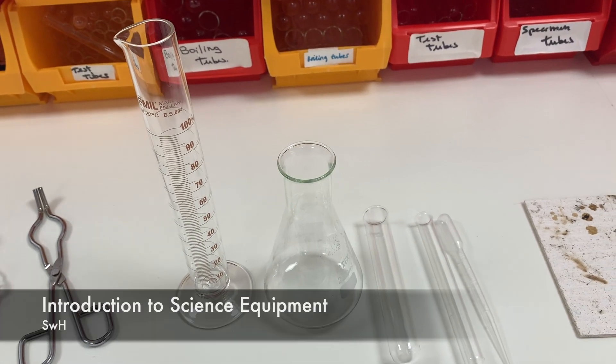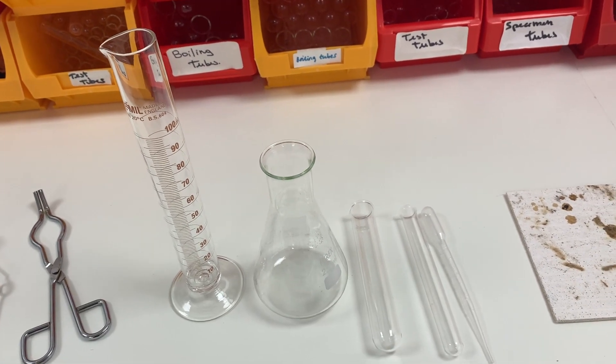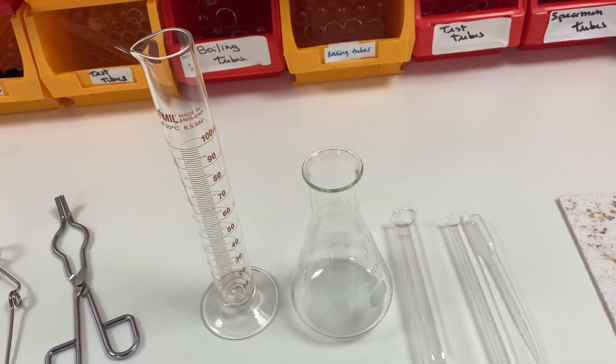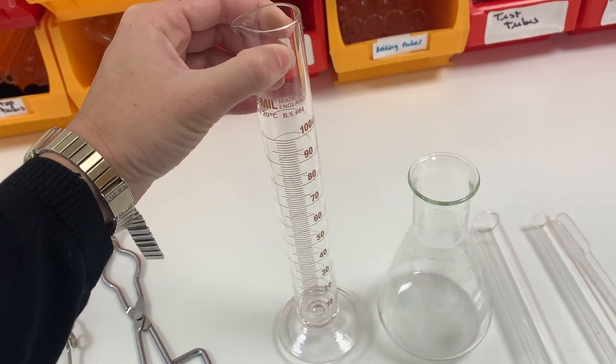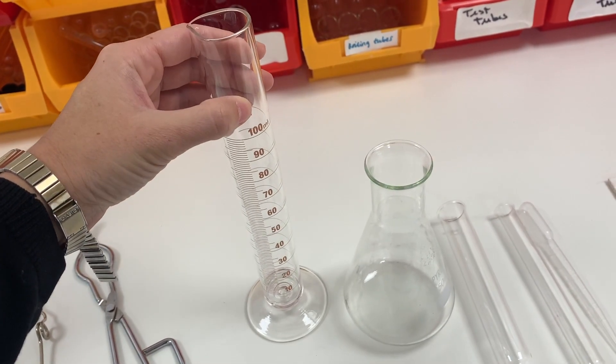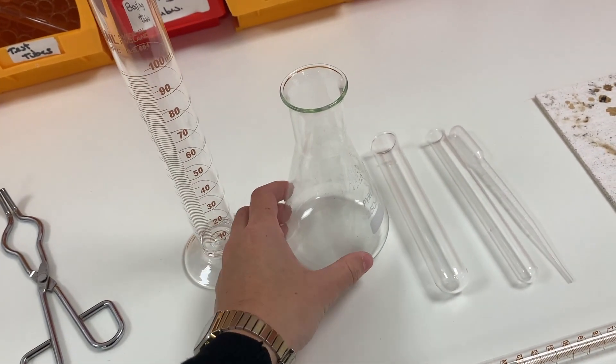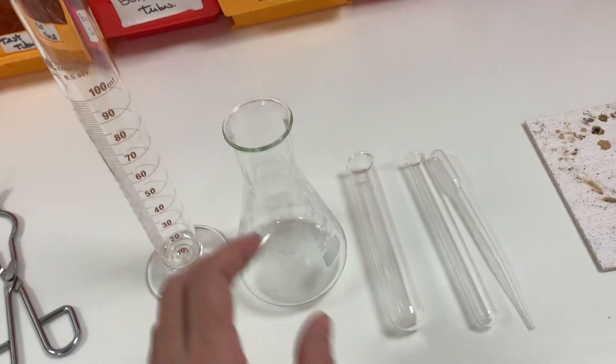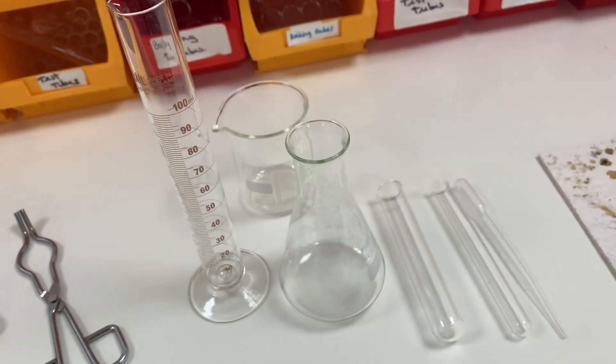Hi everyone, this is just a quick video to show you the key apparatus that you use in scientific experiments. Starting with this measuring cylinder, this is quite a large measuring cylinder that measures to a hundred centimeters cubed. Next we have a conical flask, and over here we have a beaker. All three of these apparatus are used to measure volumes of liquid fairly inaccurately.